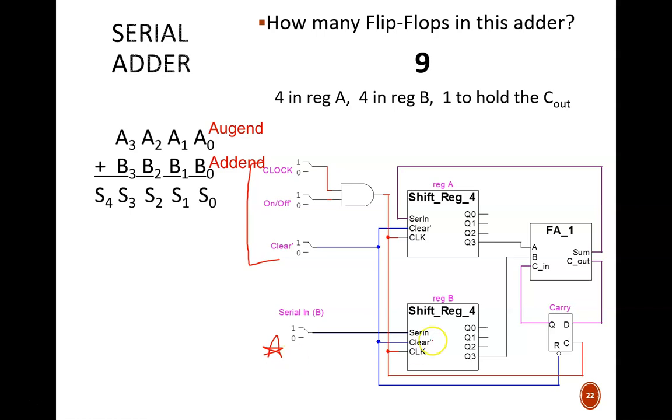Only this serial-in switch is for data input. In other words, all eight bits, four for the augend, four for the addend, must pass through this wire individually, one per clock cycle.